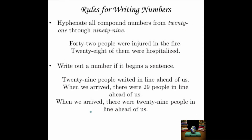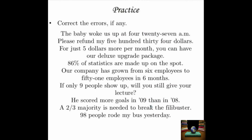Hyphenate all compound numbers from 21 through 99. So if a number starts a sentence, spell it out with a hyphen if needed: "Forty-two people were injured in the fire" or "Twenty-eight of them were hospitalized." Always write out a number if it begins a sentence. "Twenty-nine people waited in line ahead of us" — but once it's no longer the first word, numerals are fine: "when we arrived, there were 29 people in line ahead of us."